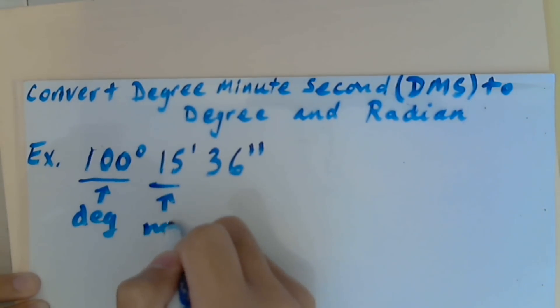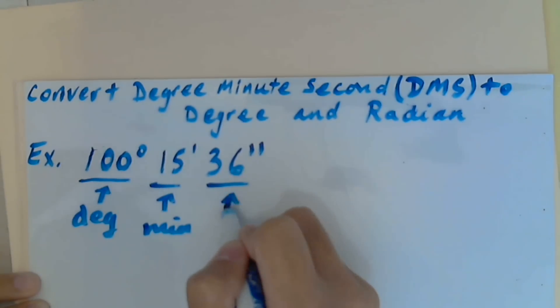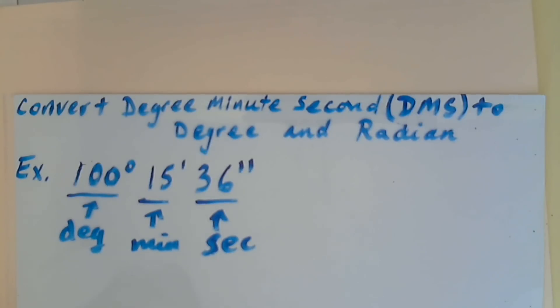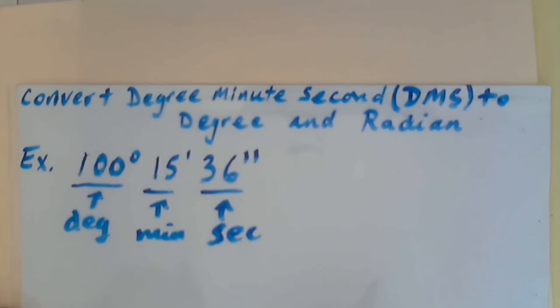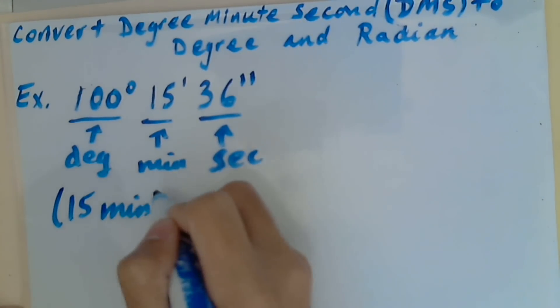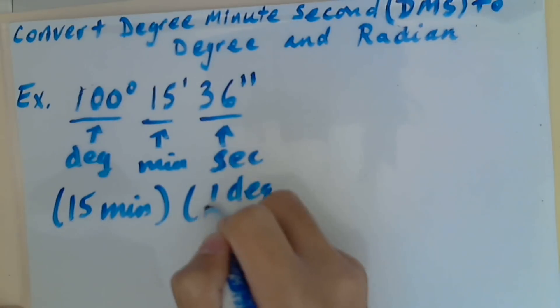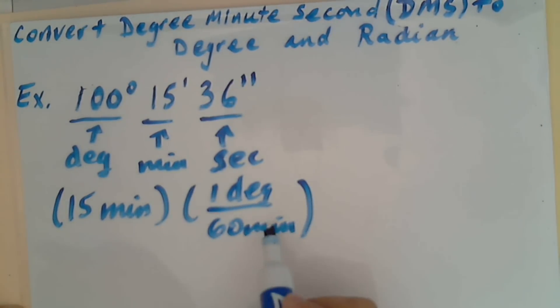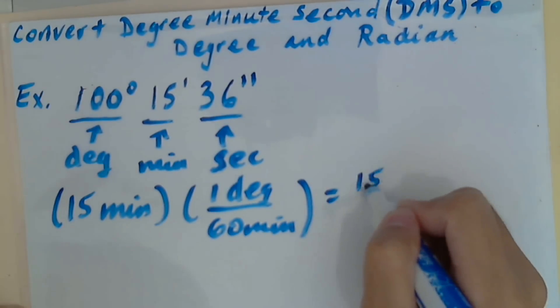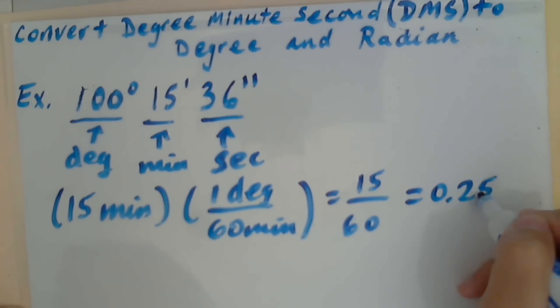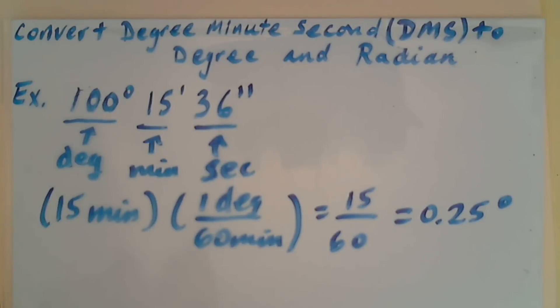I will change 15 minutes and 36 seconds into degrees. One degree equals 60 minutes. Minutes and minutes cancel out. I get 15 over 60 equals 0.25 degrees.